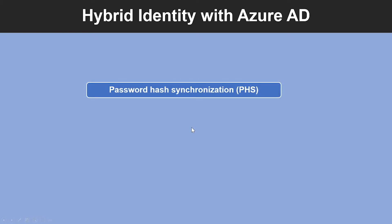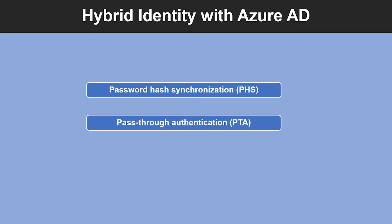The first one is Password Hash Synchronization. Password Hash Synchronization helps by reducing the number of passwords your users need to maintain to just one. It is an extension to the Directory Synchronization feature implemented by Azure AD Connect Sync. You can use this feature to sign into Azure AD services like Microsoft 365.